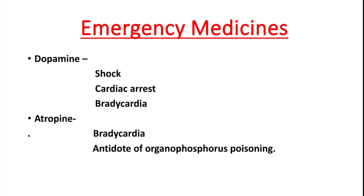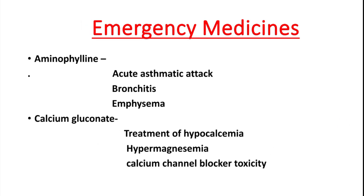Atropine is used in emergency conditions when the patient has organophosphorus poisoning — then we administer atropine. The next is aminophylline. The functional class is bronchodilator. It is used in acute asthmatic attack; it helps to dilate the bronchial space, and is used in bronchitis and emphysema.